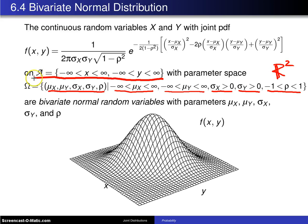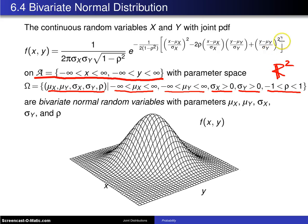The joint probability density function is one over two pi sigma X sigma Y times the square root of one minus rho squared, times e to the negative one over two times one minus rho squared, times the quantity of the standardized value of X squared, plus the standardized value of Y squared, minus two rho times the product of the standardized random variables. That defines a bivariate normal random variable with parameters mu X, mu Y, sigma X, sigma Y, and rho.